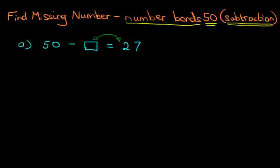And the reason why we're doing this is so that the missing number is on one side of the equal sign. We're moving the missing number over here. And on the left hand side, we've got 50 minus 27.